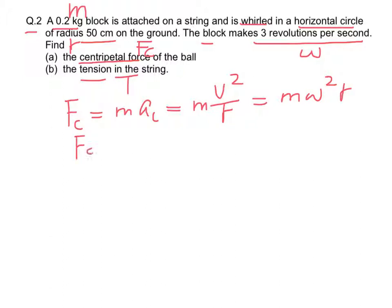Therefore, Fc would be equal to 0.2 times omega. Omega is equal to 3 times 2π. Omega squared is 3 times 2π squared, times the radius 0.5 meter, equal to 35.5 newtons.